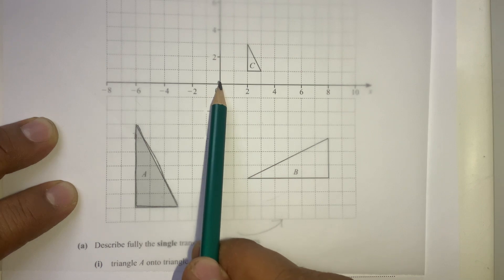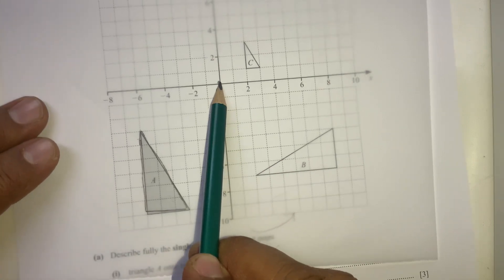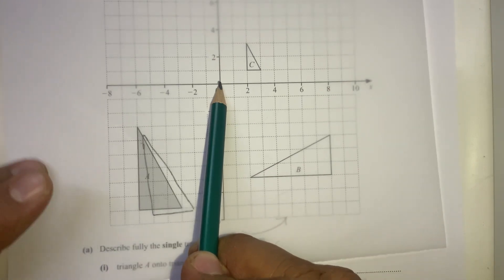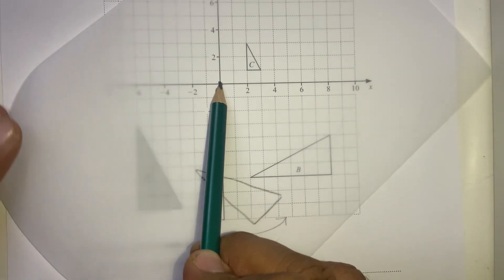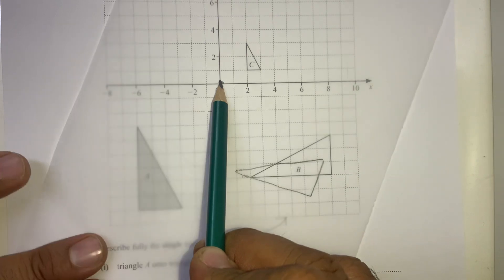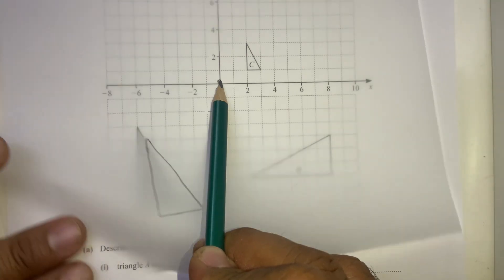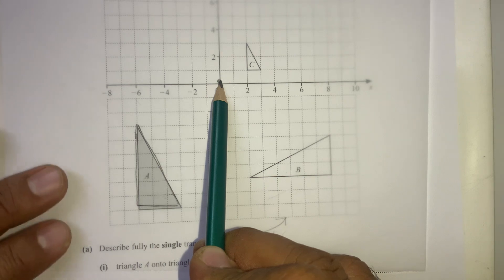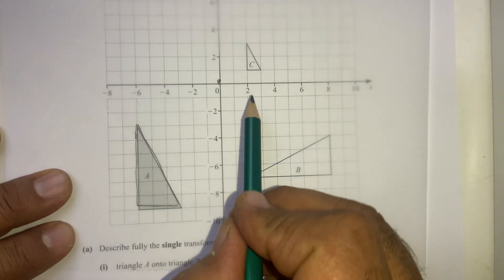You can try the origin and rotate 90 degrees. It doesn't work, so we can try different points. We can try this point 1 and 0, and rotate.